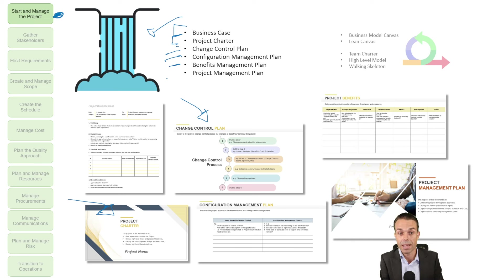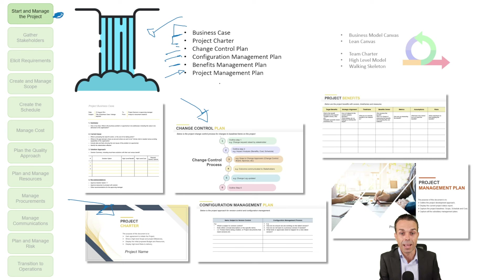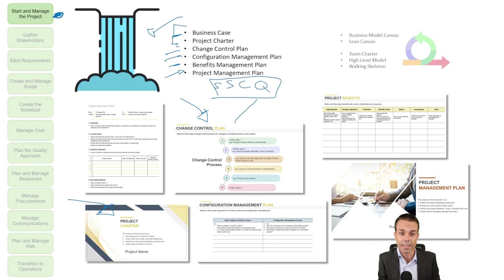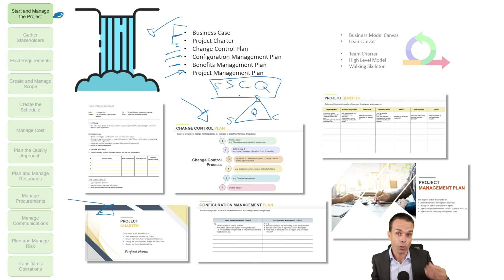The configuration management plan handles version control — how we keep versions of our system under control. The benefits management plan and ultimately the project management plan are planned up front with our scope, schedule, cost, quality, and all those things in our triple constraint of scope, schedule, cost and quality in the middle. We plan all of that up front.